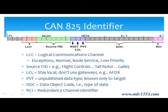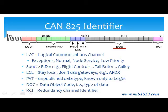A significant portion of the ARINC 825 specification relates to how to interpret the 29-bit identifier. The automotive CAN spec gives no guidance to this area. The LCC, or logical communications channel, which are the most significant three bits of the identifier, are used to select a message type such as normal messages, high priority exceptions, and so on. The lower the number of the channel, the higher the priority. The Source Function ID field identifies the type of device transmitting the data. The Data Object Code, or DOC field, identifies the nature of the data — for example, latitude and longitude.